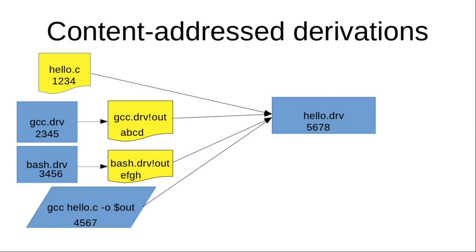This means that if I change my gcc derivation, so it changes its hash, but in a way that keeps the same output, then hello.drv will have the same inputs effectively, and so it won't be invalidated and I won't have to rebuild it.